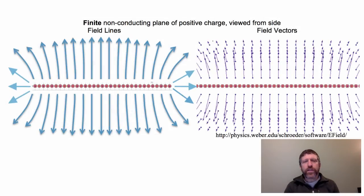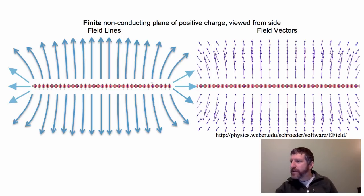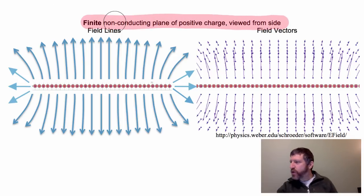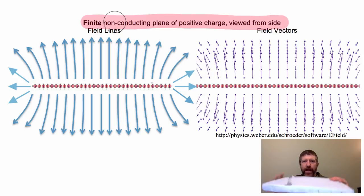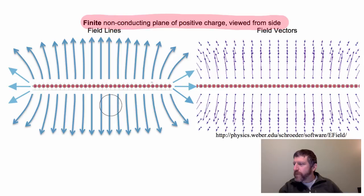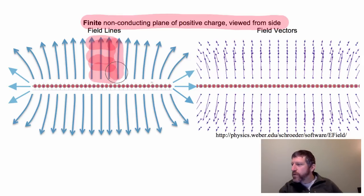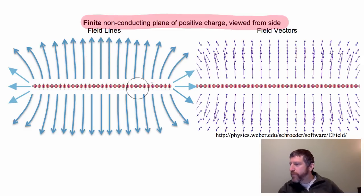Here we get to some really incredibly useful charge distributions. The first one we're going to look at is a finite non-conducting plane of positive charge, viewed from the side. You can see that the field lines obviously go away from these positive charges. In the middle, the field is kind of uniform — the lines tend to look parallel and they point perpendicular to this flat plane.